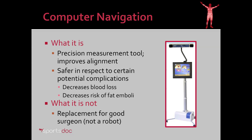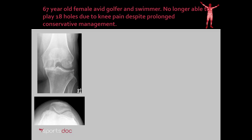So what's the computer navigation? Basically, it's a more precise measurement tool than we've ever had in orthopedic surgery. It's also somewhat safer in respect to certain potential complications such as blood loss and the risk of fat emboli. The standard way of measuring the angles in the knee is to drive a rod up the femur and the tibia during the surgery, which allows extensive bleeding from the bone and increases the pressure inside the bone and the risk of fat emboli. Those two issues are not applicable to computer-navigated knee replacement where those rods are not used. It's also important to realize what computer navigation is not — it is not a replacement for a good surgeon, it's not robotic surgery. It's simply a more precise measurement tool.